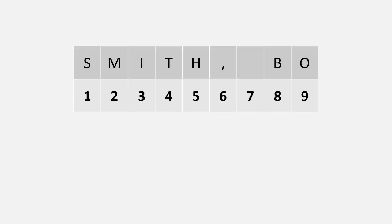The first thing you need to understand is that Excel really thinks about pieces of text in terms of their position. So for 'Bo Smith', it's going to assign a number to each character — whether S, M, I, T, H, comma, space, B, or O. They all get their own number.